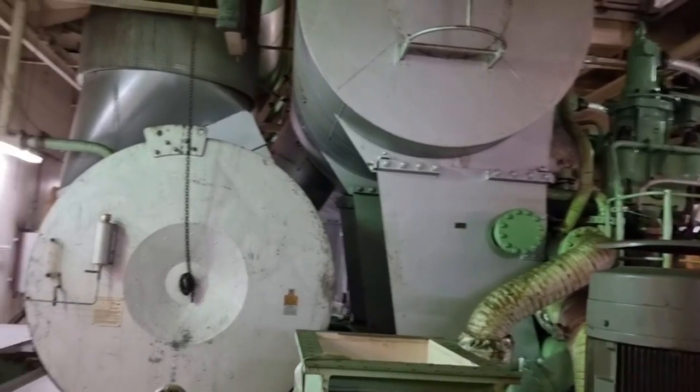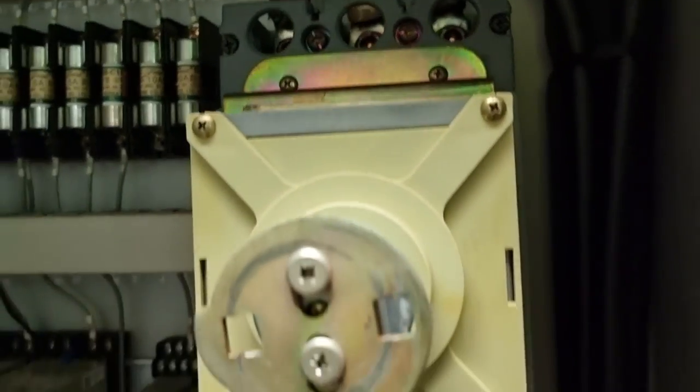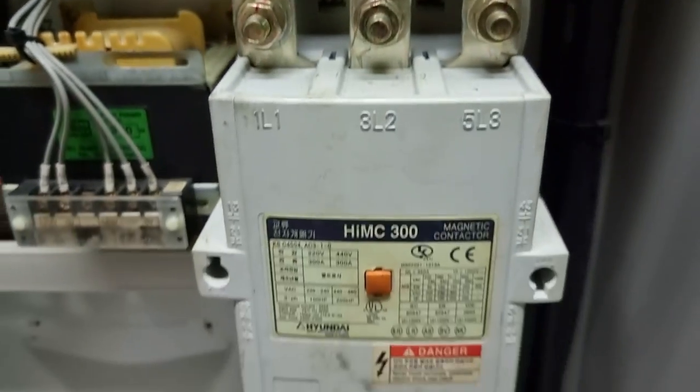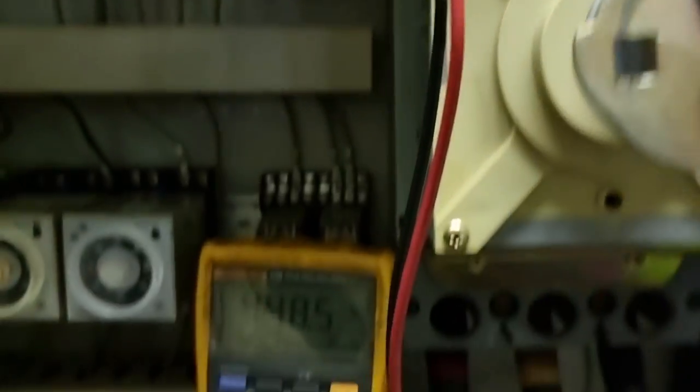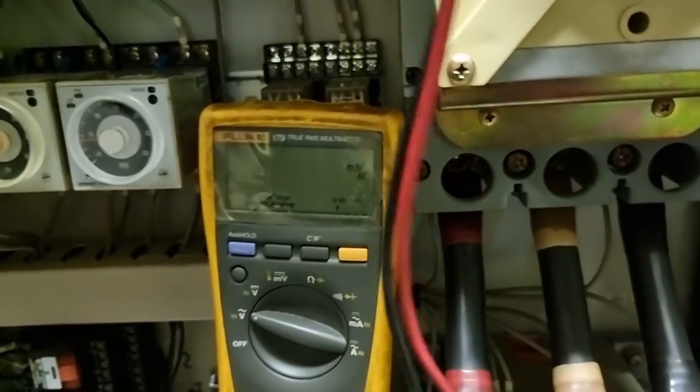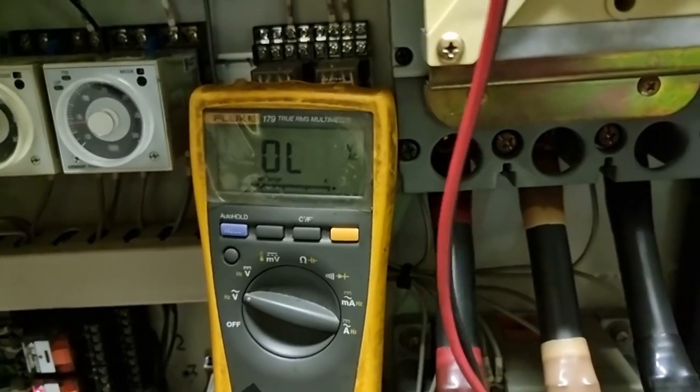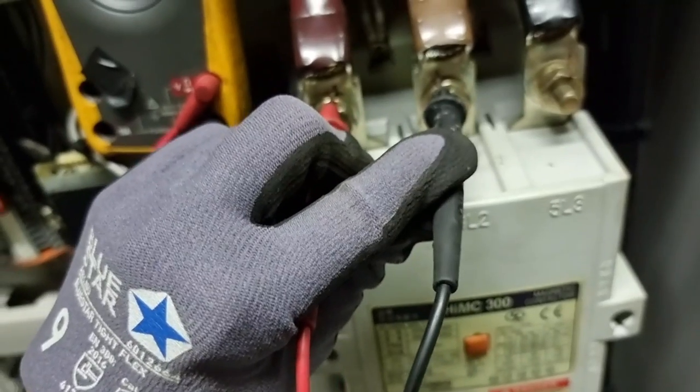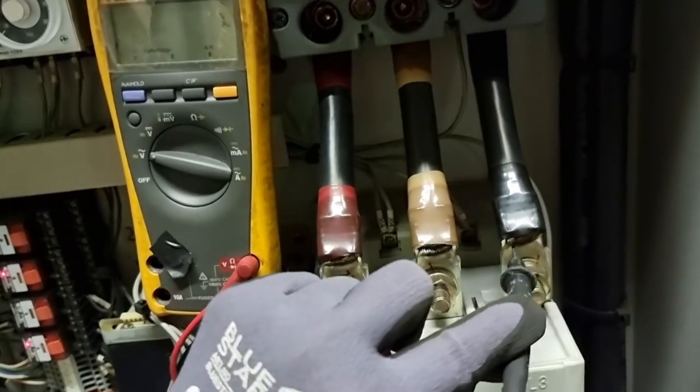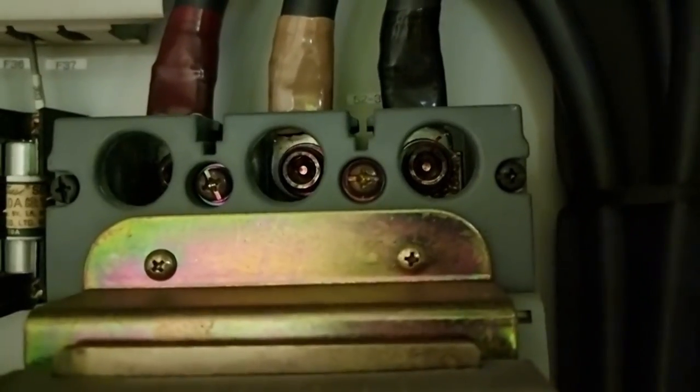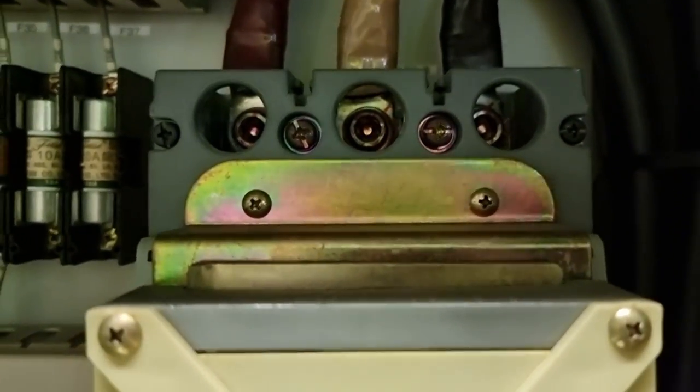Now let's proceed to the troubleshooting. The first thing we're going to do is check the supply voltage of the main circuit breaker all the way to the input of the 8.8 main contactor. As you can see, we can confirm that there is no single phasing on our supply voltage from the main circuit breaker all the way to the input of contactor 88.